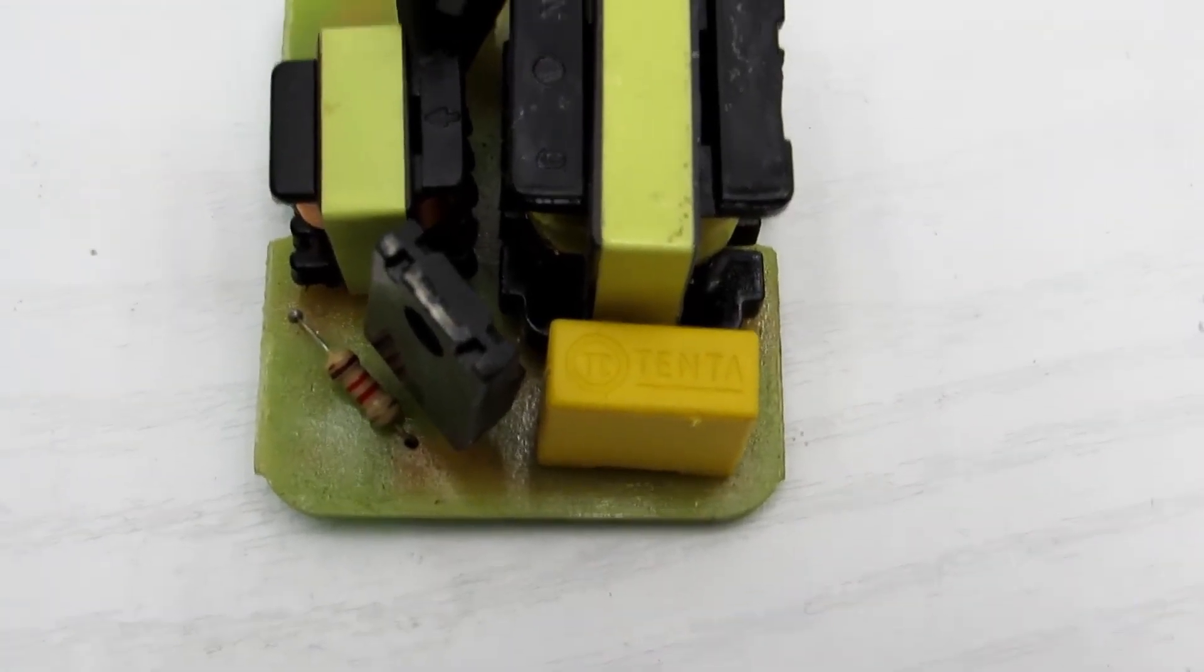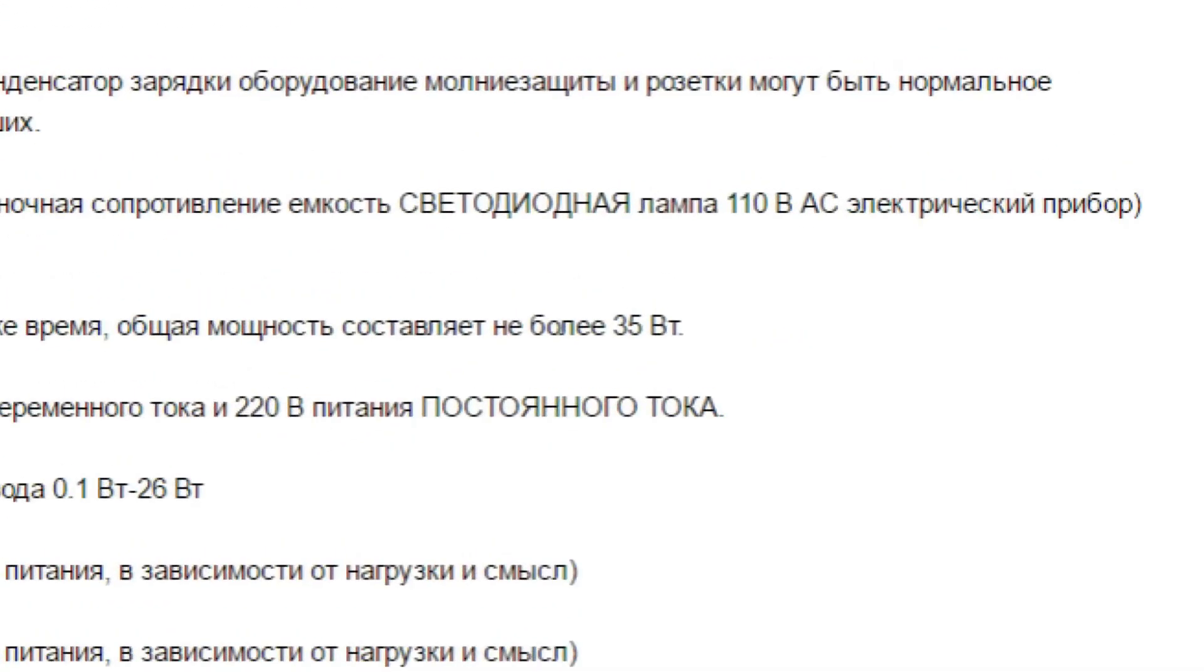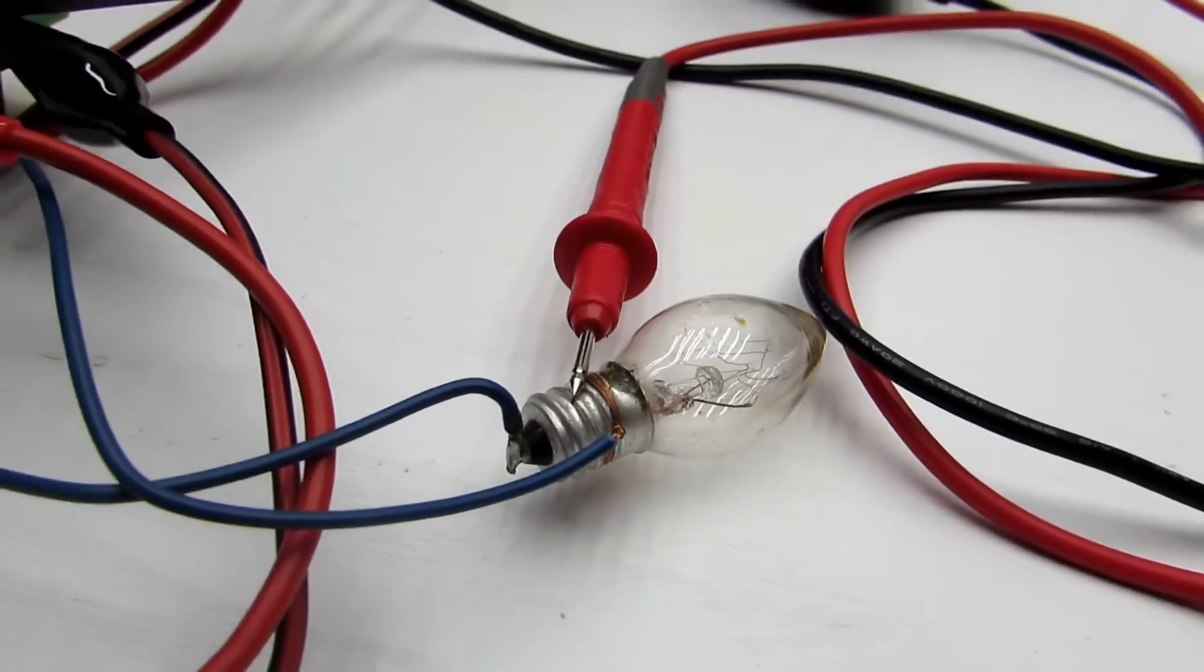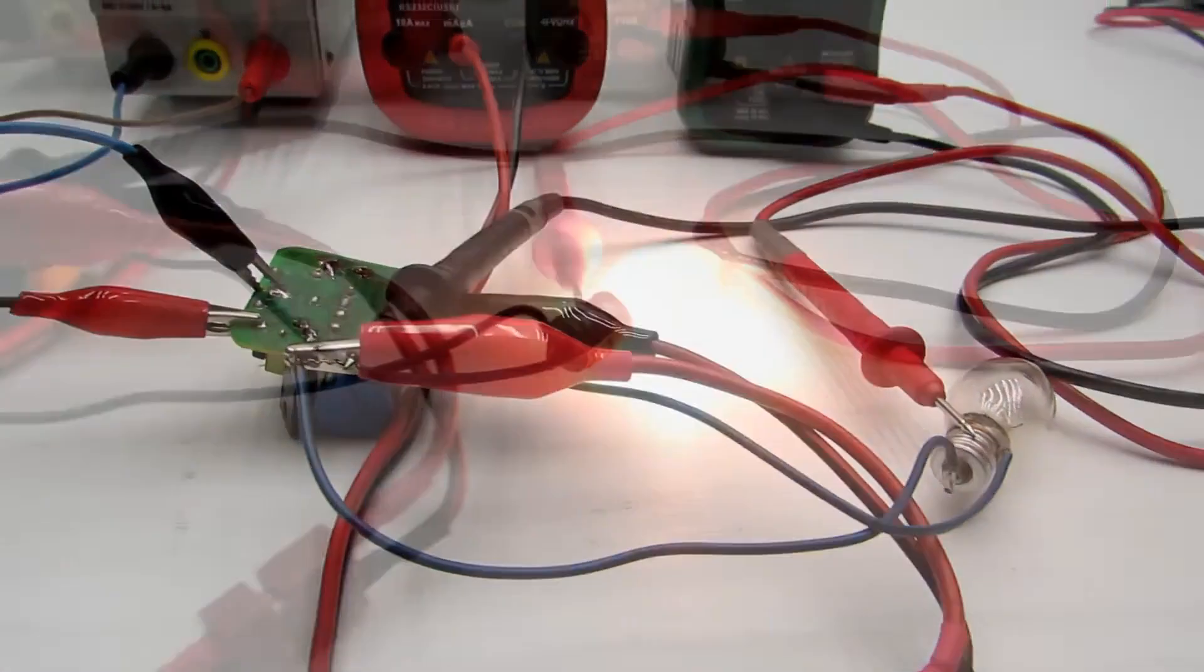Now let's check the output power. I remind you that the manufacturer claims 35W. Well, let's check it. I thought for a long time about what to load this inverter with, and eventually found a lamp from old garlands with a power of 15 to 20W.